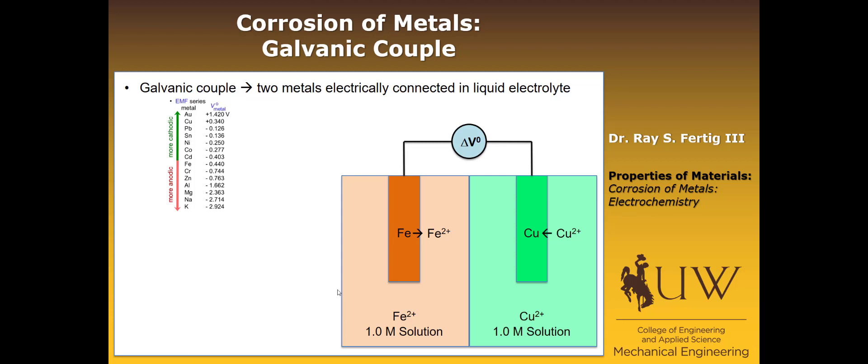Now that we've defined the EMF series, we want to talk about something called a galvanic couple. We're going to couple one metal to another, both of which are going to be in their solutions, and ask what's going to happen. In this case, I'm showing you iron as one of our metals and copper as the other metal. We can determine what's going to happen with this system by looking at what the V0 values are from the EMF table. We look up copper, there it is, 0.34 volts. We look up iron, there it is, negative 0.44 volts.